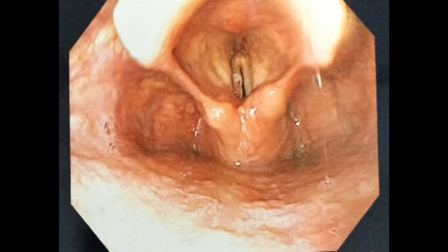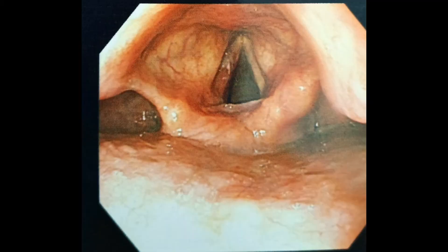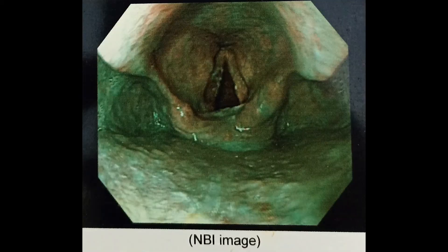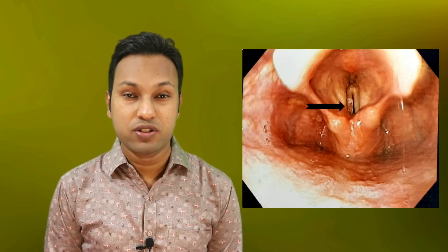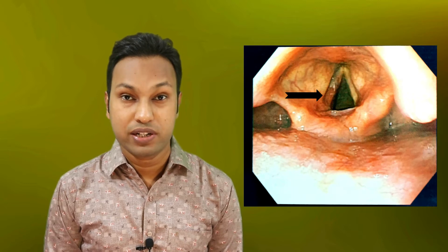Welcome to my channel. A patient presented with chronic hoarseness of voice. On laryngoscopic examination, we found this kind of finding. The laryngoscopic picture showed that the patient has ulceration in one of the vocal cords in its mid and posterior aspect. We did direct laryngoscopic biopsy from the ulceration under general anesthesia, and the report showed that the ulceration is due to tuberculosis.